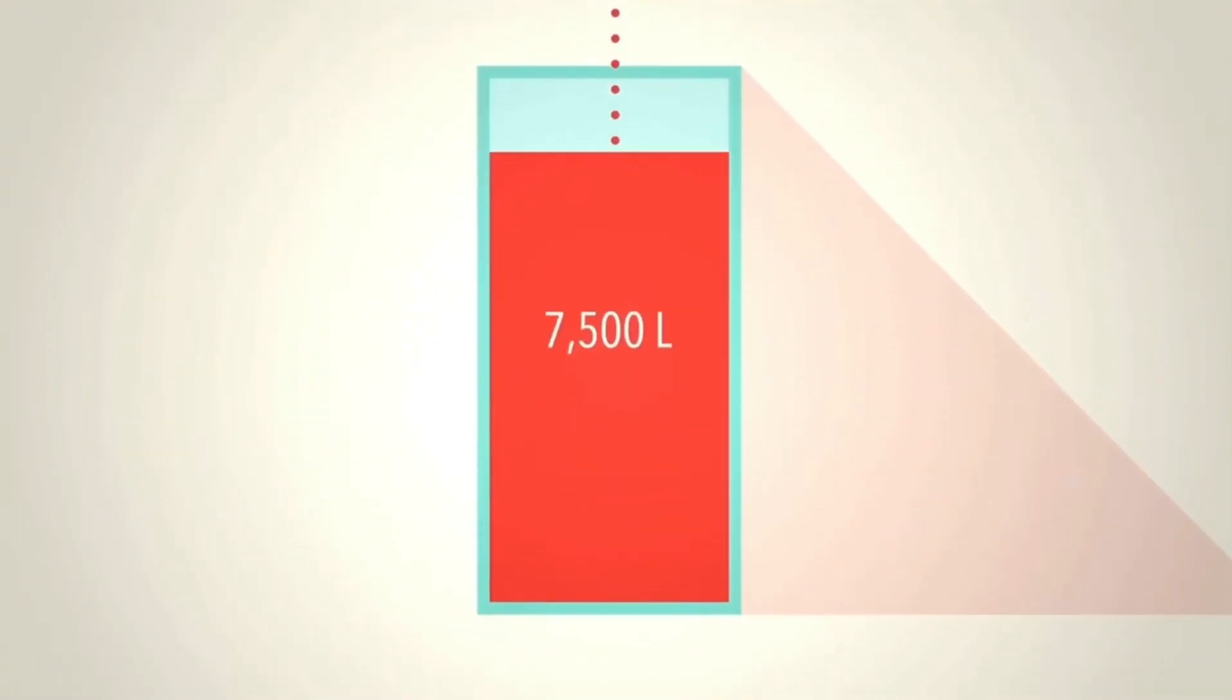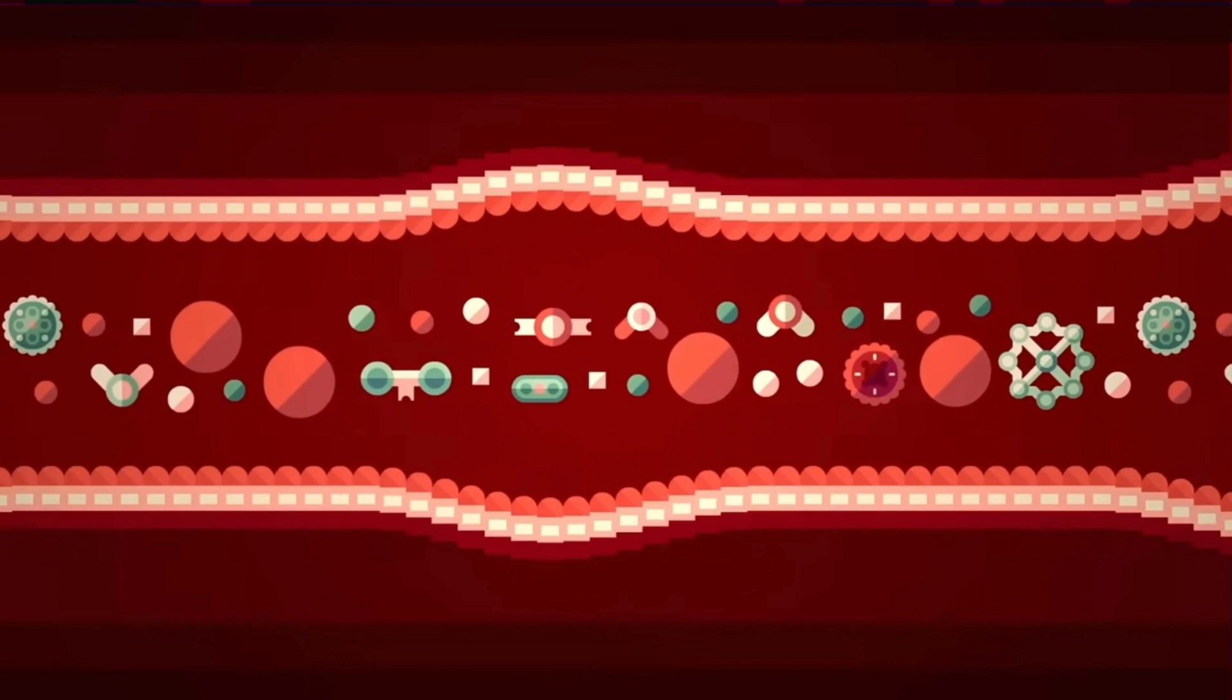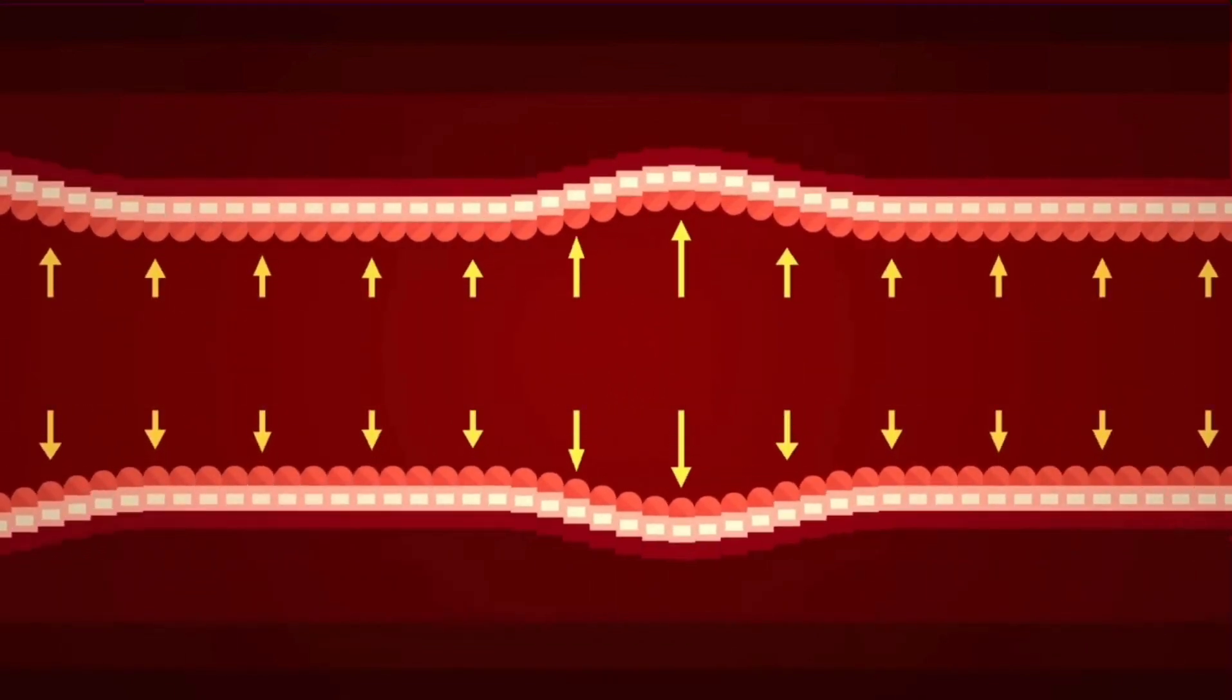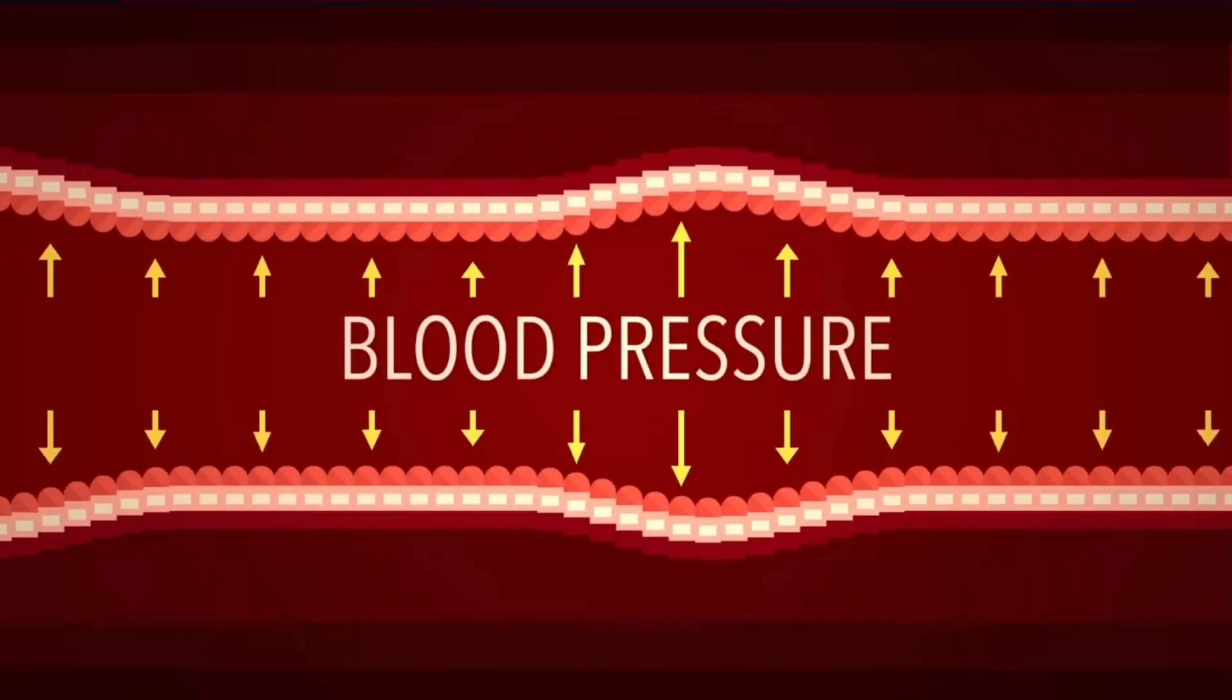The human circulatory system is a complex network that transports approximately 7,500 liters of blood throughout the body's intricate network of blood vessels. This circulatory process exerts a dynamic force upon the muscular walls of the blood vessels. This is known as blood pressure.